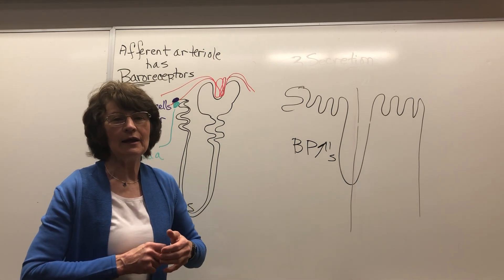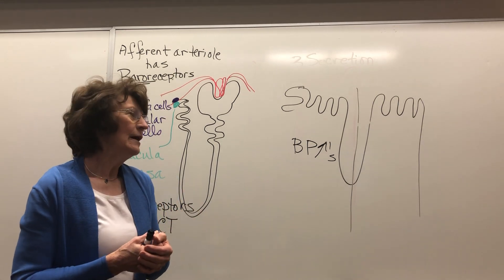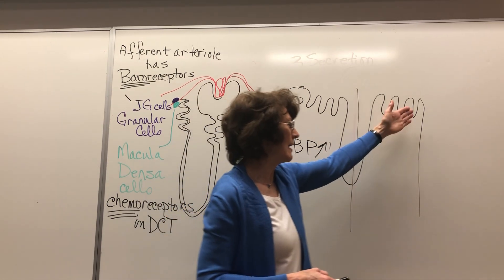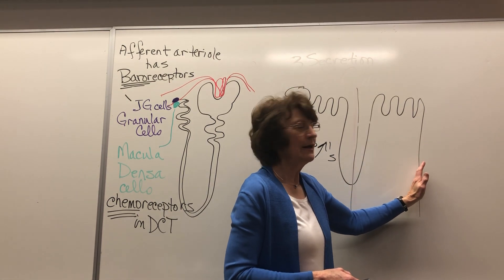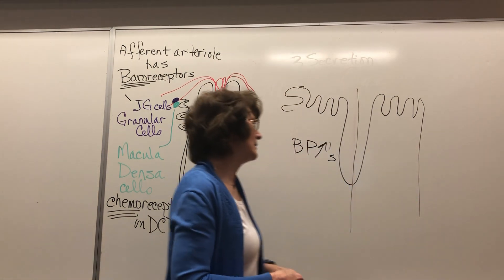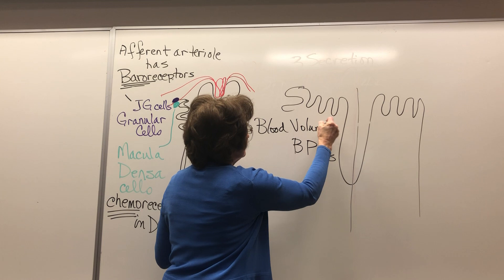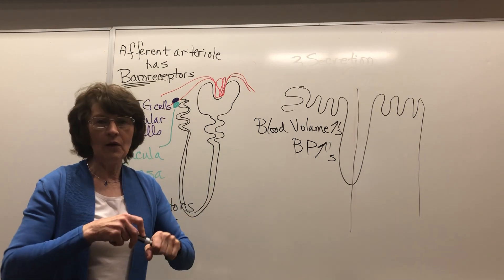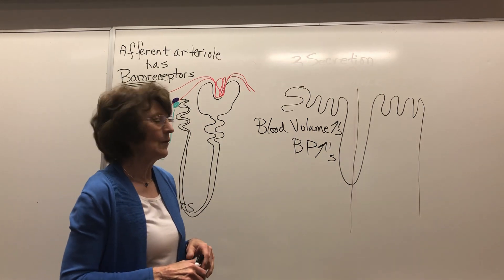ADH is also released. If ADH is released, what did ADH do? Look back at the diagram — what was it that ADH would do to the collecting tubule? It opened aquaporins, and if it opened aquaporins it was going to retain water. By retaining water, what did it do to blood volume? It can increase blood volume and therefore increase blood pressure — and that was the goal for this juxtaglomerular complex. That's the auto-regulation for the kidney.